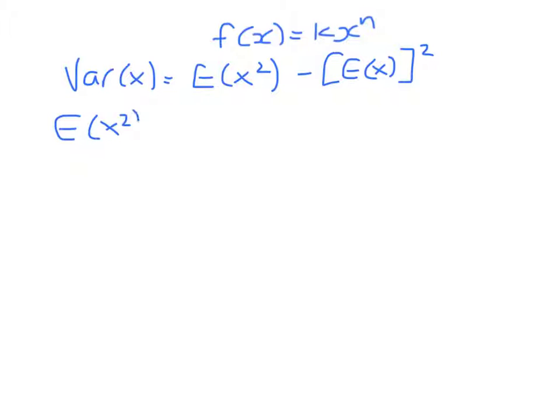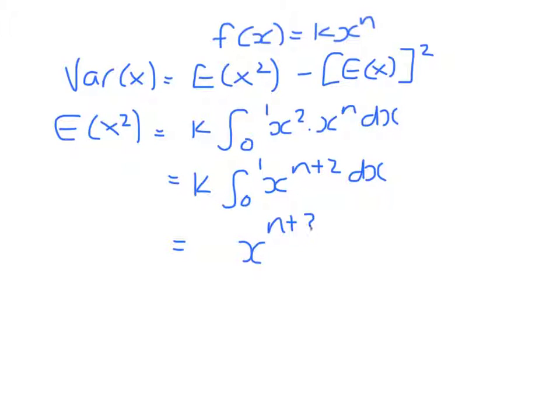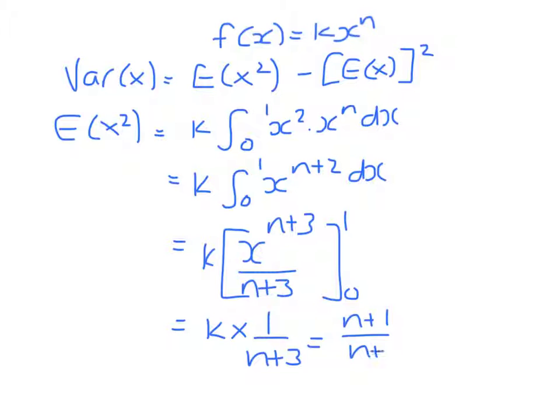Expectation of x squared will be the integral of x squared times x to the power n. So that's the integral of x to the power n plus 2. Add 1 to the power and divide by the new power, between 0 and 1, and remembering our k. Which gives us k times 1 over n plus 3. So that's n plus 1 over n plus 3.